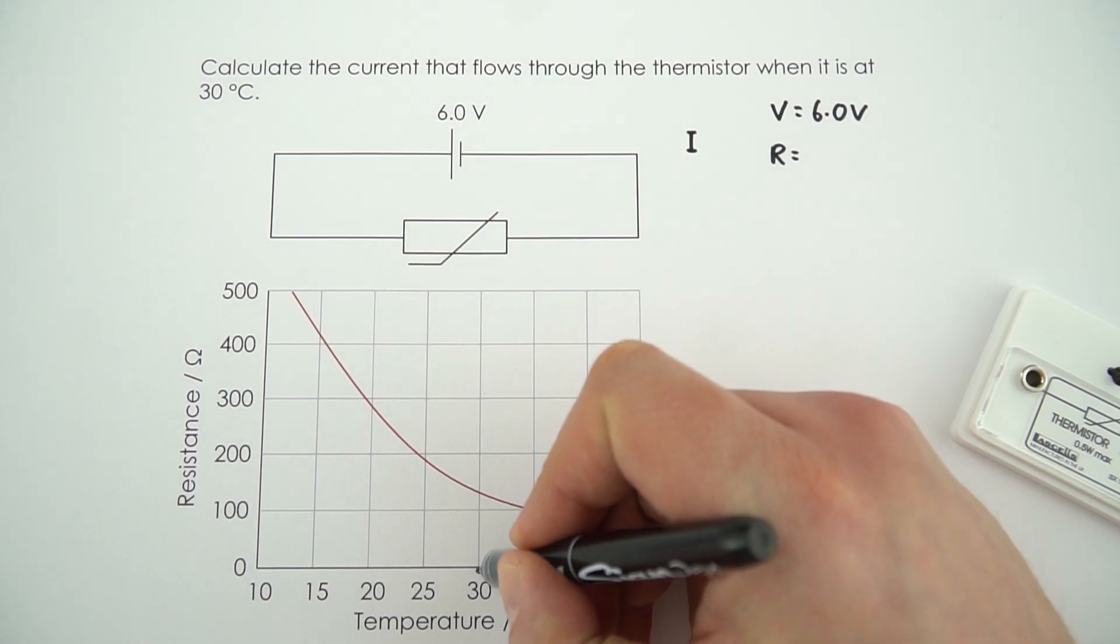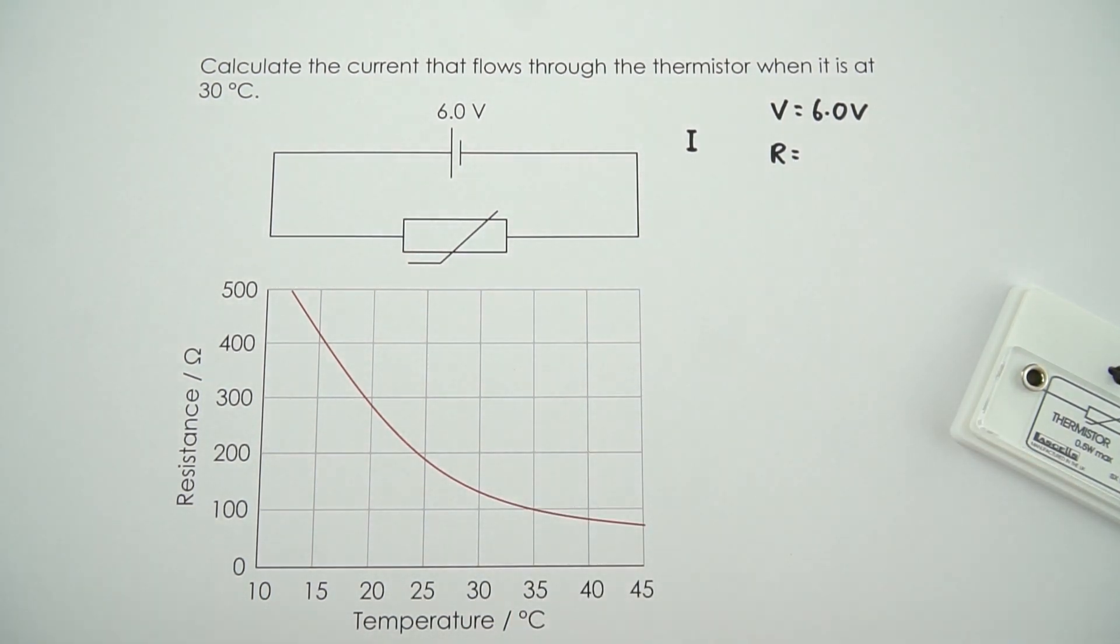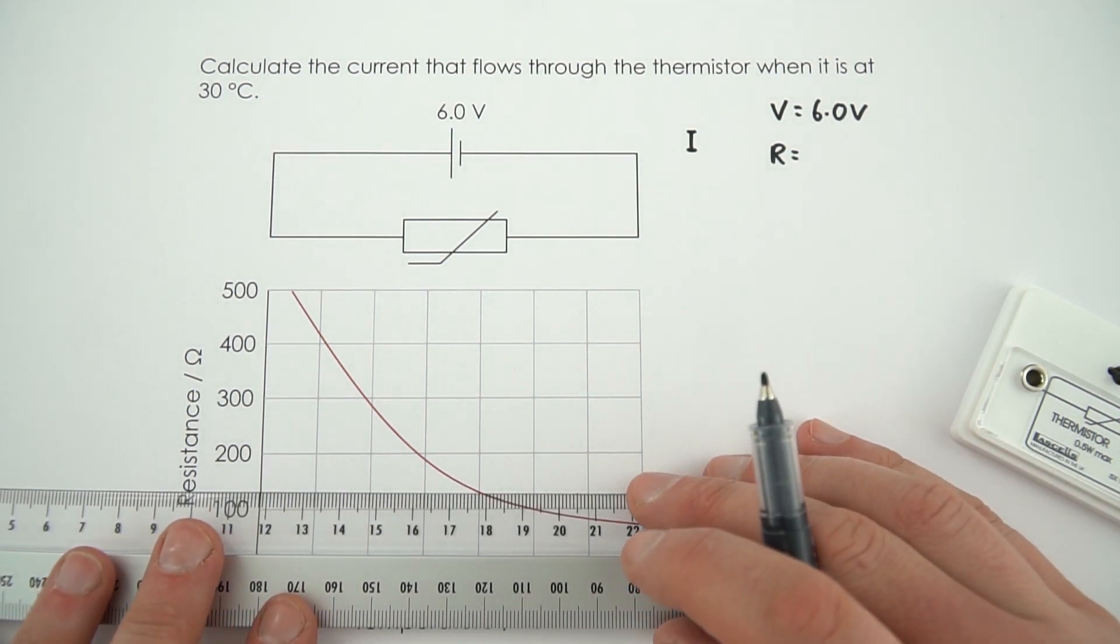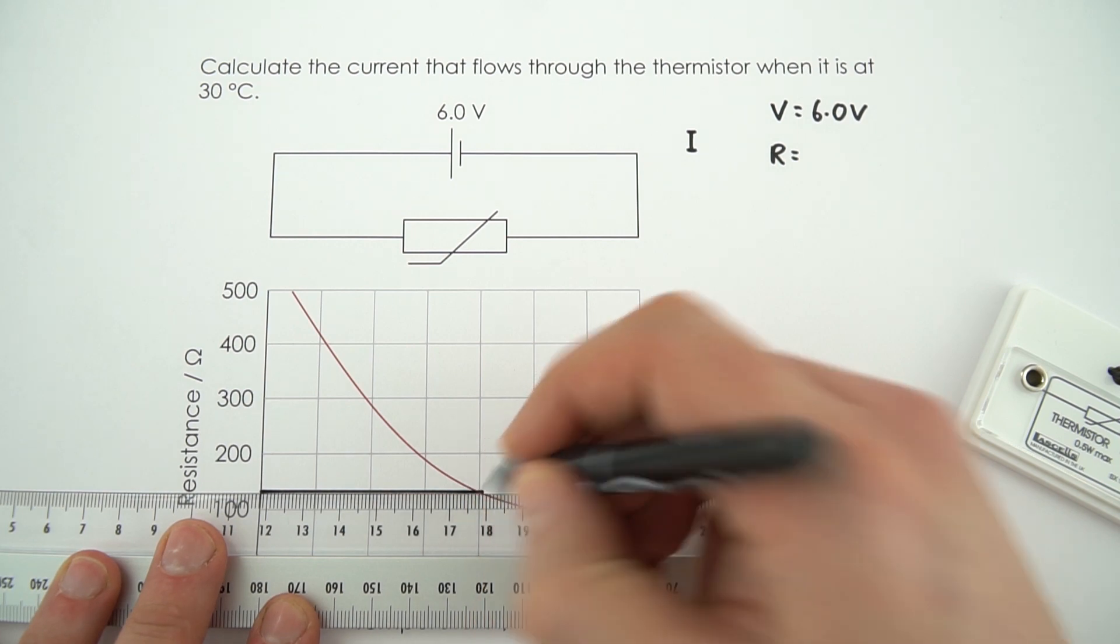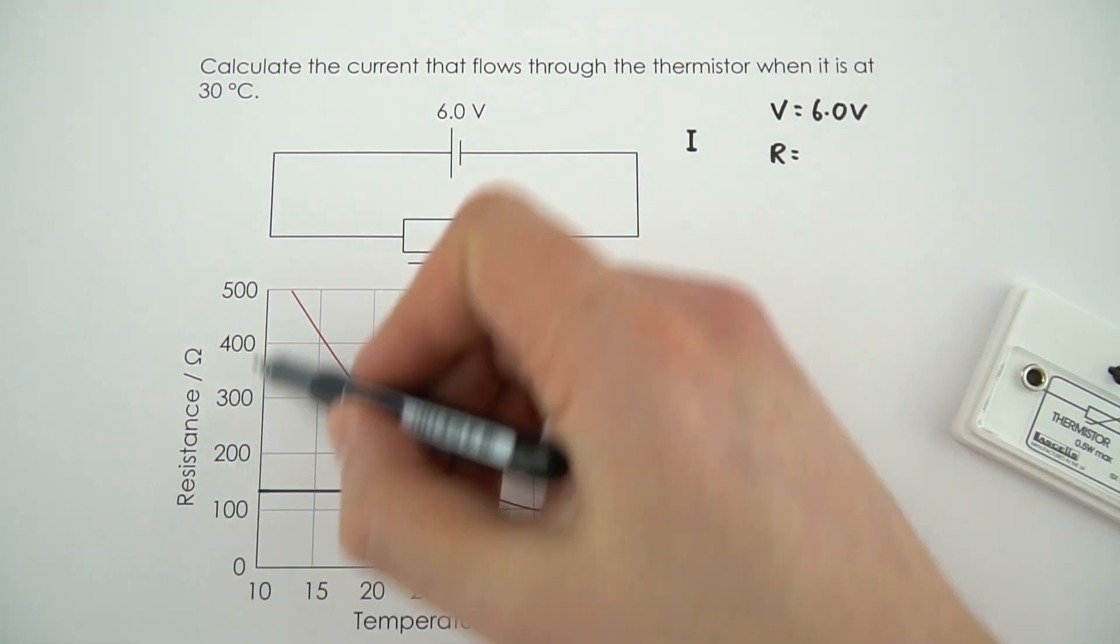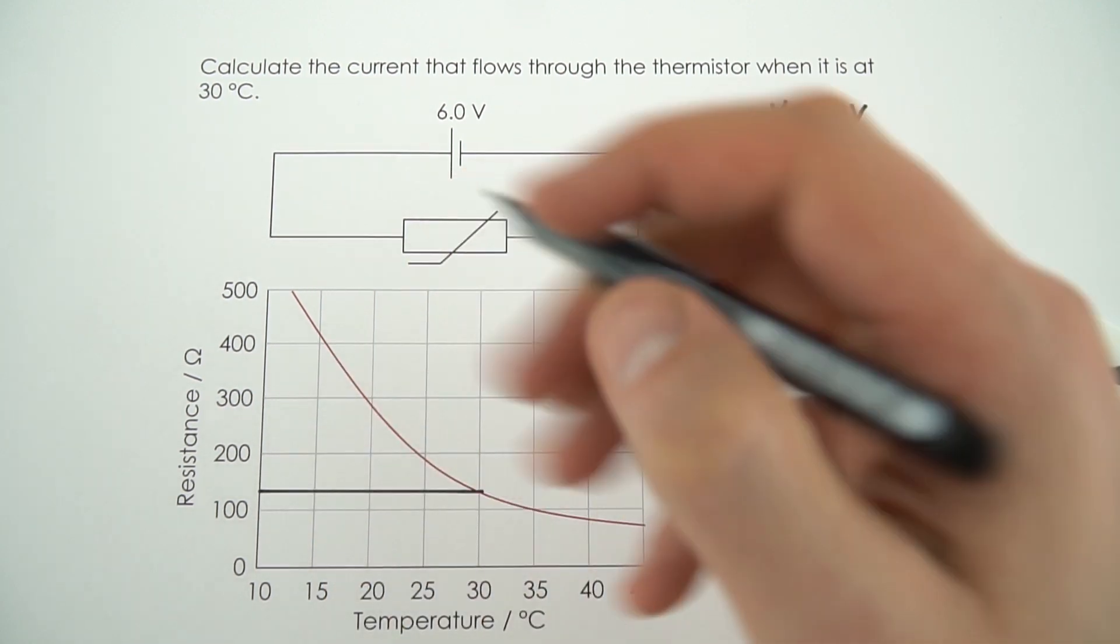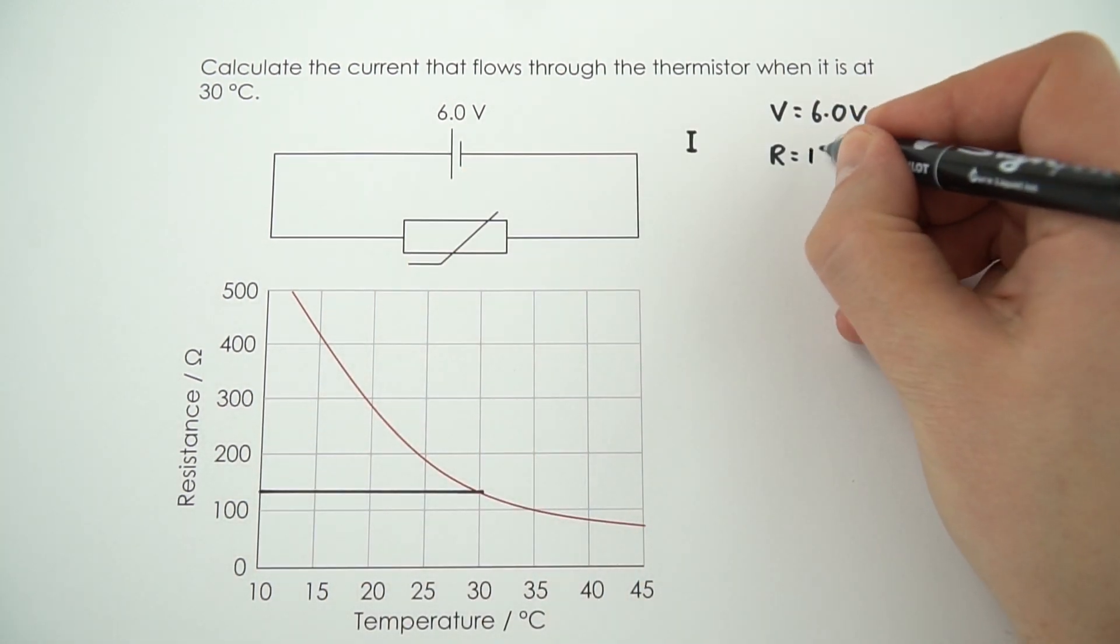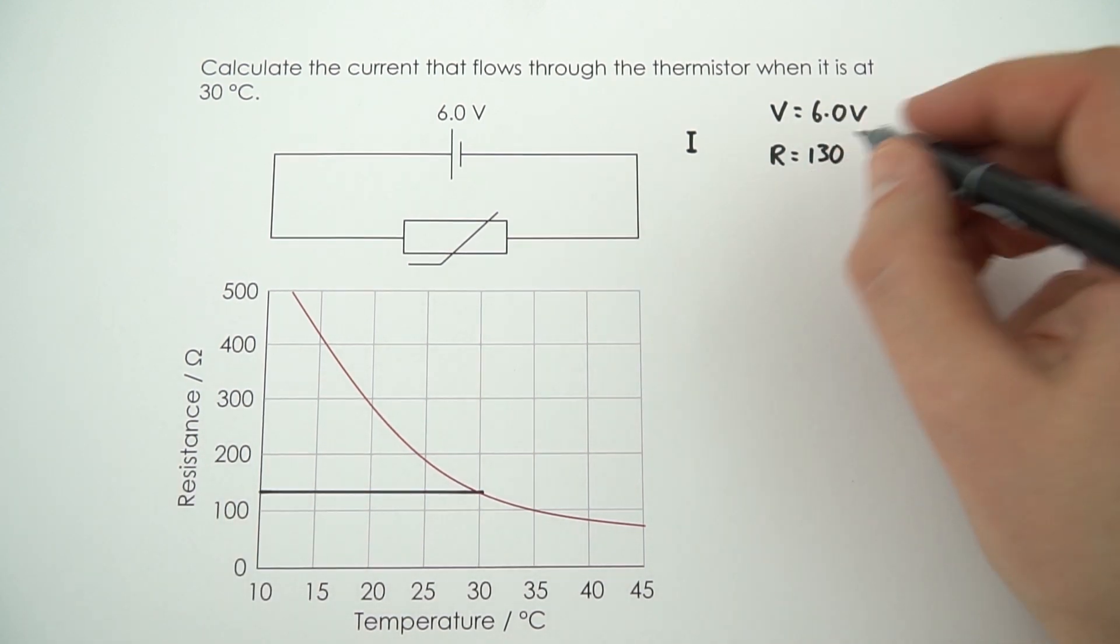Now when the temperature is equal to 30, the resistance is this value here. So I'm just going to use my ruler here, draw a horizontal line across to work out the value on the y-axis. I'd say that using this scale here, this is about 130 ohms. Obviously depending on the graph paper you've got, you can maybe read that a little bit more accurately, but I'm going to say the resistance is 130 ohms.